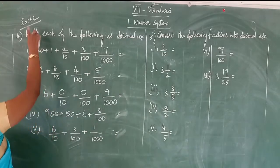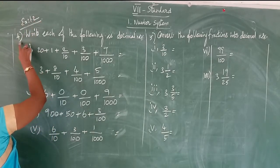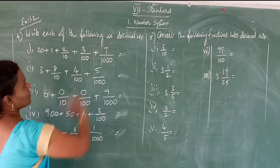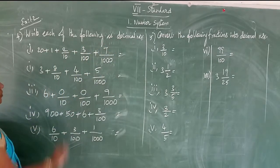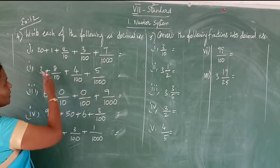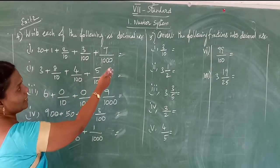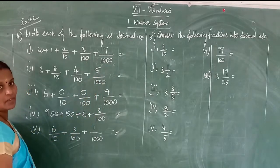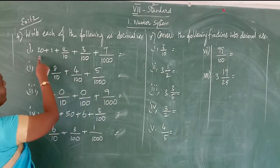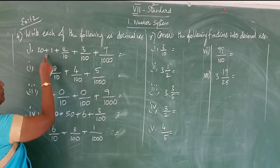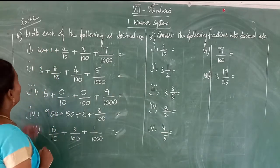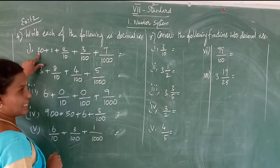Exercise 1.2, fourth sum: write each of the following as decimal numbers. You are given in expanded form — from this expanded form you have to write the decimal number. See here: the whole part is 20 plus 1, so start from the tens space.